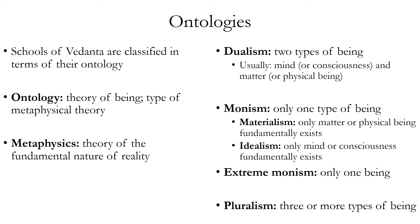There are three main types of ontology: dualism, monism, and pluralism. Dualism is the theory that there are two main types of beings or existences — usually mind and matter. Sometimes the word 'physical being' is preferred because, according to the modern scientific view, matter is only one possible state of physical energy; light energy or photons, for example, don't count as matter. The most common type of dualism distinguishes between physical reality and mind or consciousness, when consciousness is regarded as fundamentally non-physical in its nature.